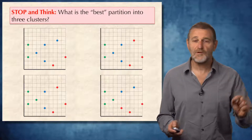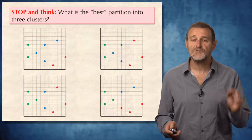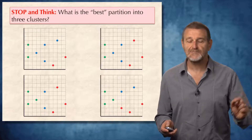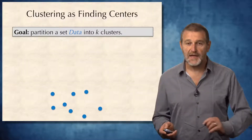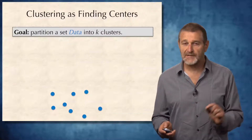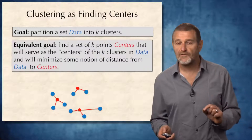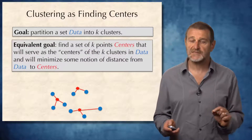Here is a small dataset of four points and four different ways to cluster it. Which of them is the best clustering? Our goal now is to come up with a notion of an objective function for clustering. To do this, I will take a liberty to reformulate the goal of clustering into the equivalent goal of finding centers of clusters.